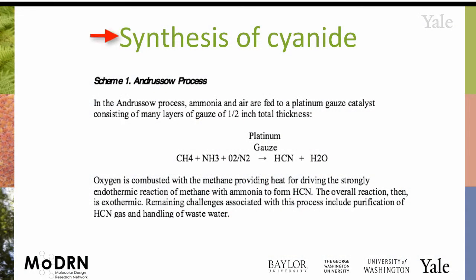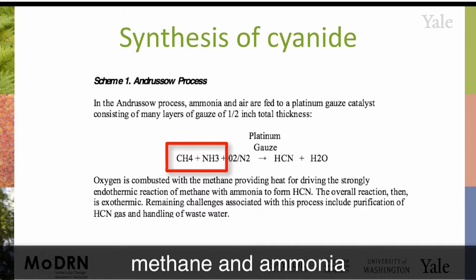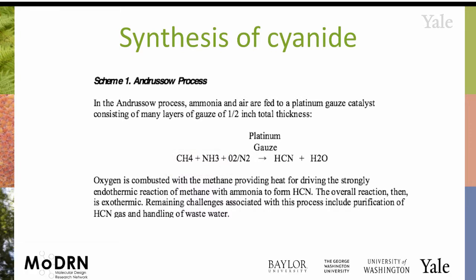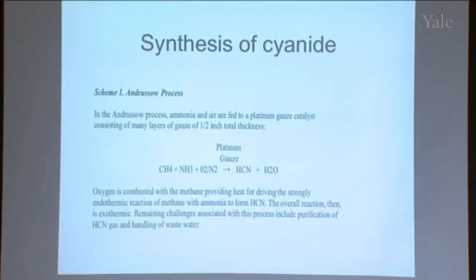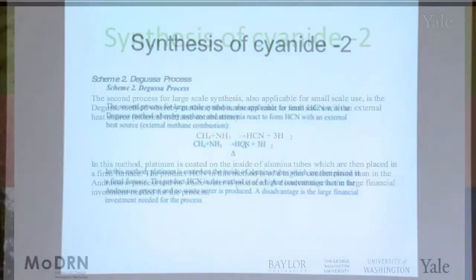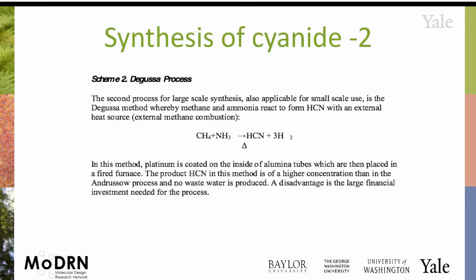The synthesis of cyanide: the traditional way to produce it is a process combining methane and ammonia. But because the first step is so endothermic, you need to put in so much energy that you actually combust the methane with oxygen to drive that first step of the reaction. We now have ways of doing it catalytically with an external energy source instead, making it a much, much cleaner reaction.